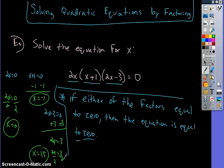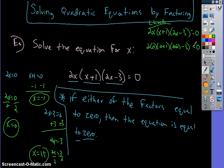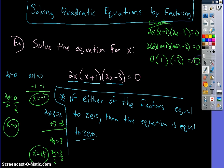Let's check it. Take 0 and plug it in for all the x's. The equation is 2x(x+1)(2x−3). Plugging in 0: 2(0) times (0+1) times (2(0)−3). That's 0 times 1 times negative 3. Well, 0 times any number is 0. So that worked.